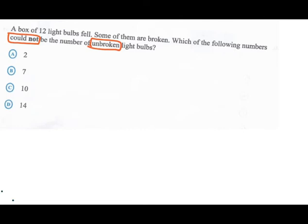Let us look at the options given. Two unbroken, that means ten were broken. So that's a possibility. Seven unbroken, that means five were broken. That's a possibility. Ten unbroken, that means two broken. Fourteen unbroken, no, that can't work. So obviously our answer would be D.